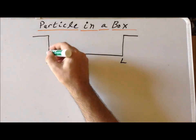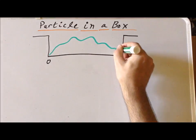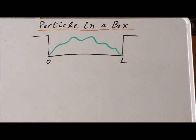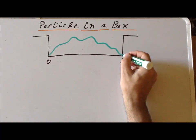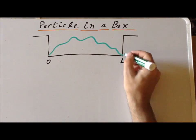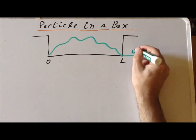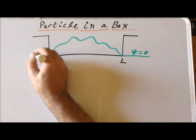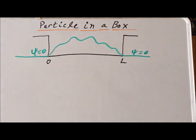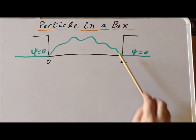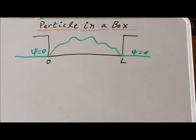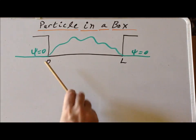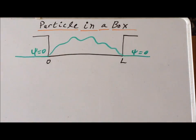Inside the box, our particle is described by some wave function. This wave function has interesting properties. One important property is that we know that exactly at the endpoints, the wave function has to equal 0. We know that psi is 0 outside the box because the probability density psi squared equals 0 — meaning there's no possibility at all that the particle is there — and by implication, psi itself must equal 0.